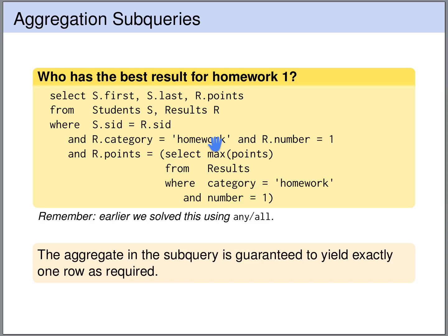It returns a single column and a single row — a single value. In the outer query we are joining the students table with the results table, looking at the homework1 results, and checking whether the number of points a student got on homework1 is equal to the maximum that any student has gotten. This comparison will be true if the student has the best result on homework1. Recall that such a comparison between an atomic value and a subquery, without the keywords ALL, ANY, or SOME, is only allowed if the subquery returns a single value.